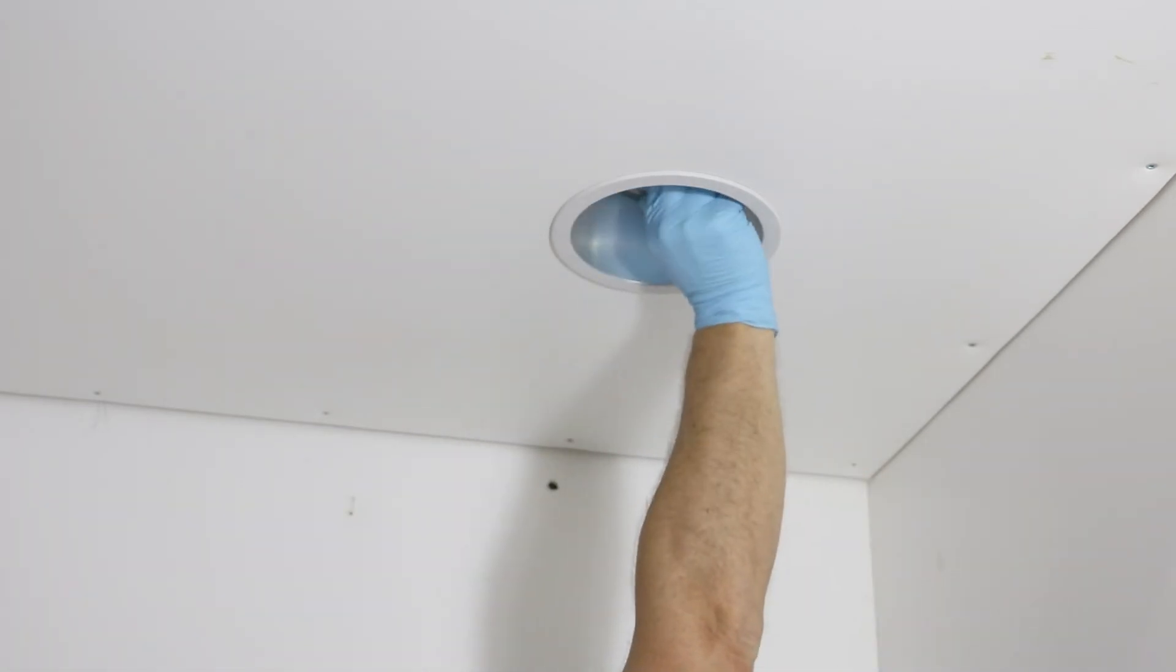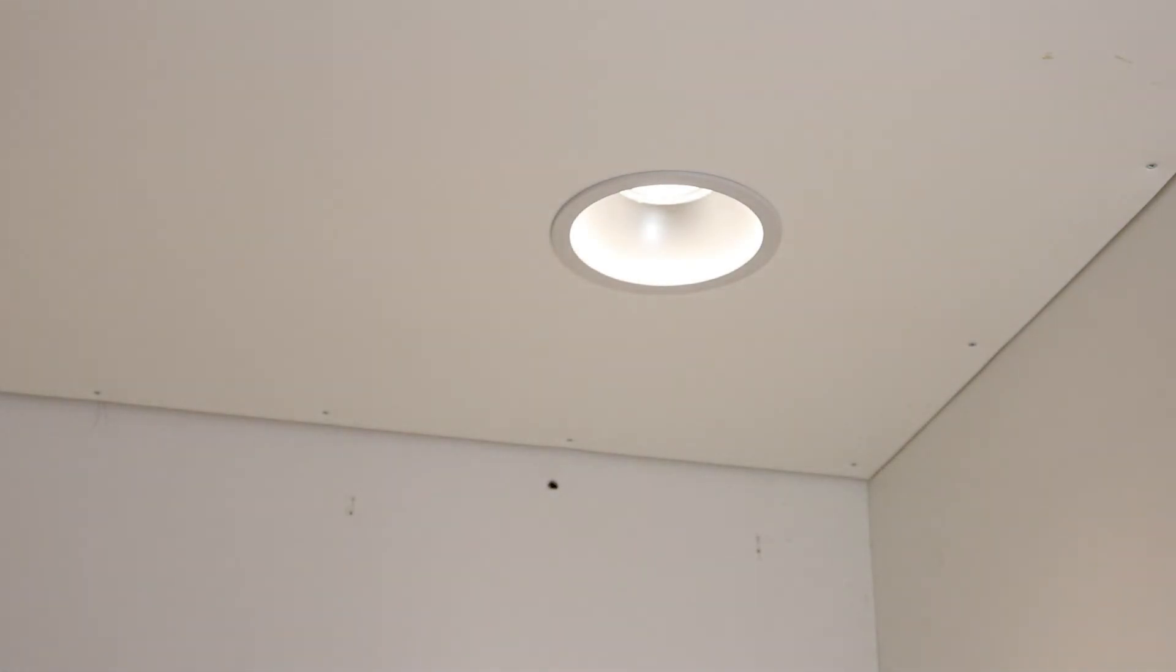Insert the lens and secure in place by twisting clockwise. Power can now be restored at the electrical panel. The Genesis 6-inch is now fully installed and operational.